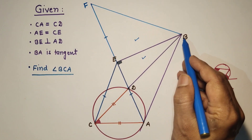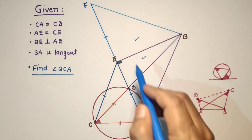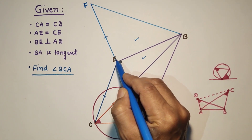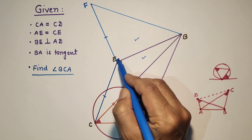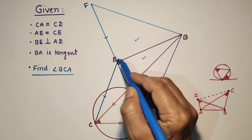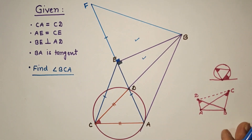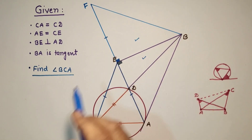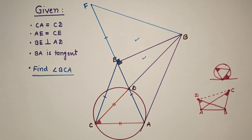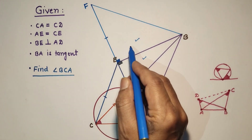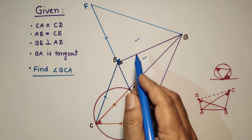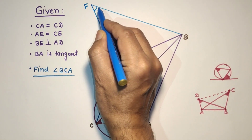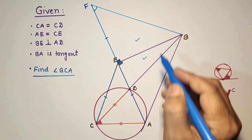Now, AE equals EF by construction, EB is common to both triangles, and the angle at E is 90 degrees. By the linear pair, the other angle is also 90 degrees. So these two triangles are congruent by the SAS test of congruency, and therefore their corresponding angles are also equal.